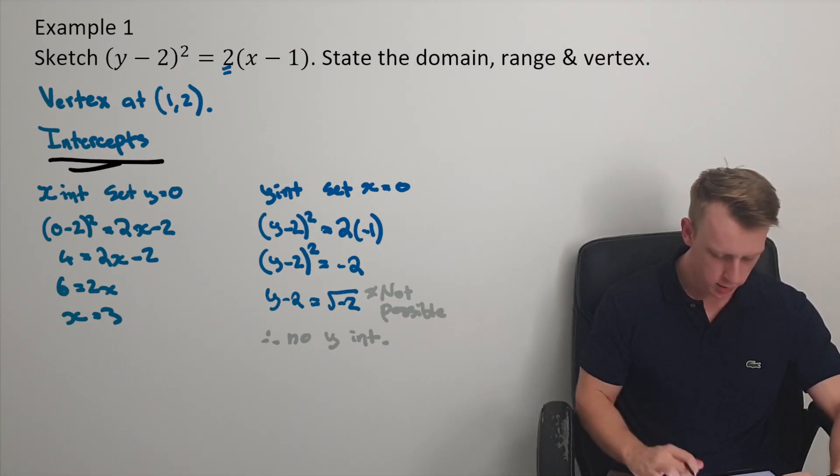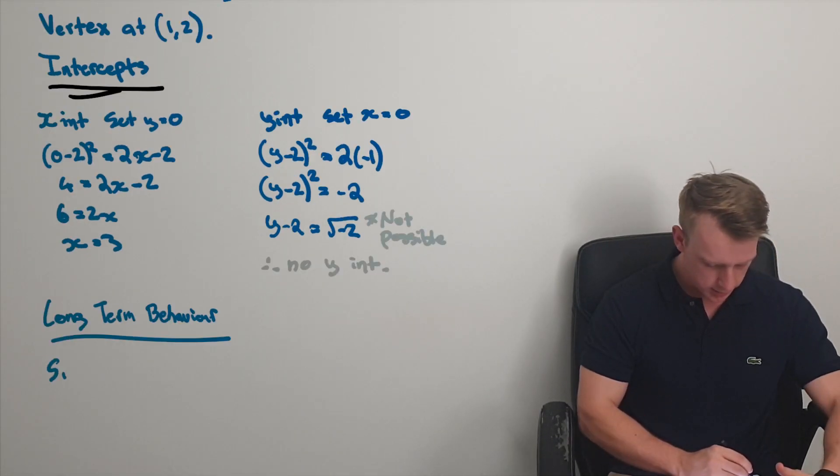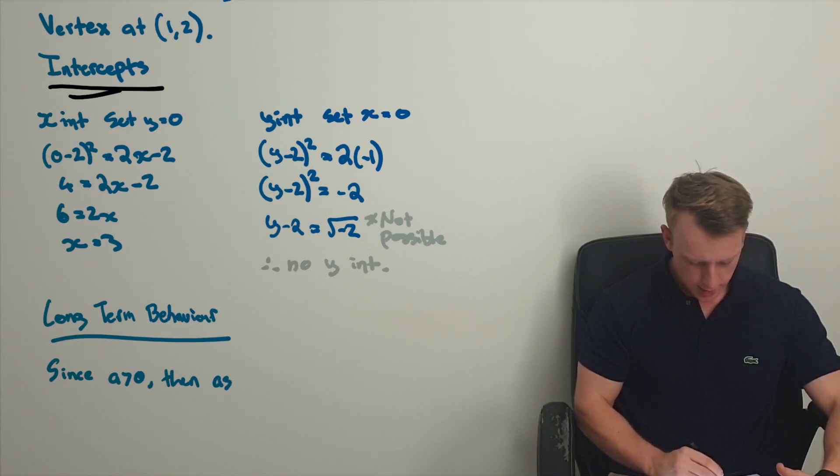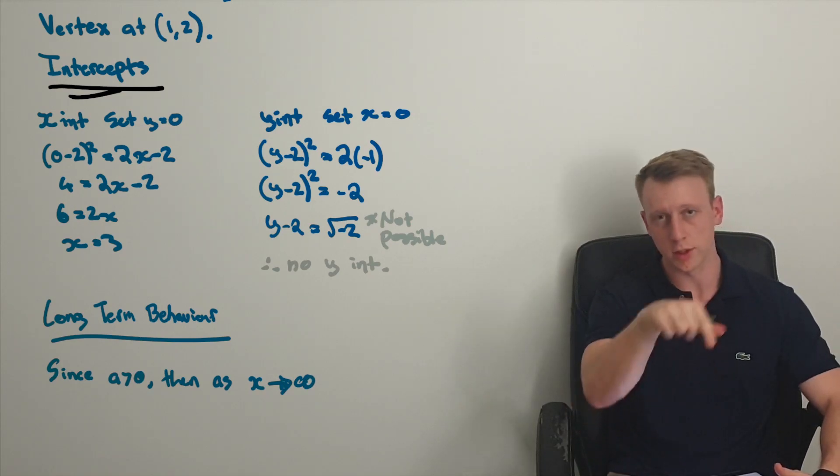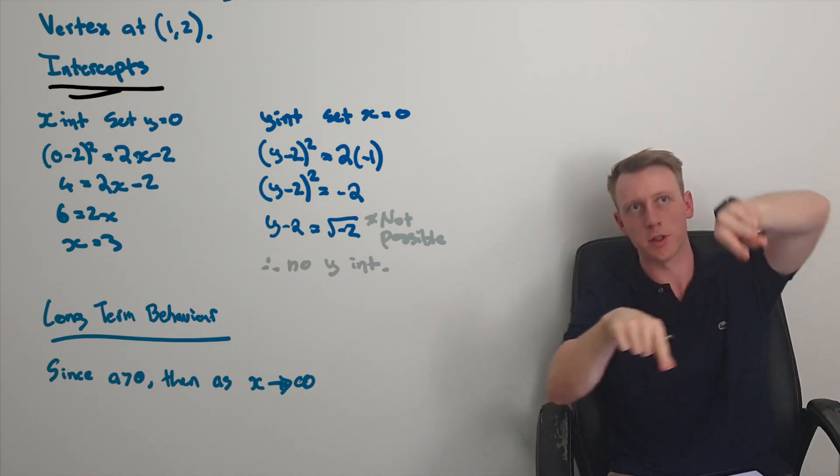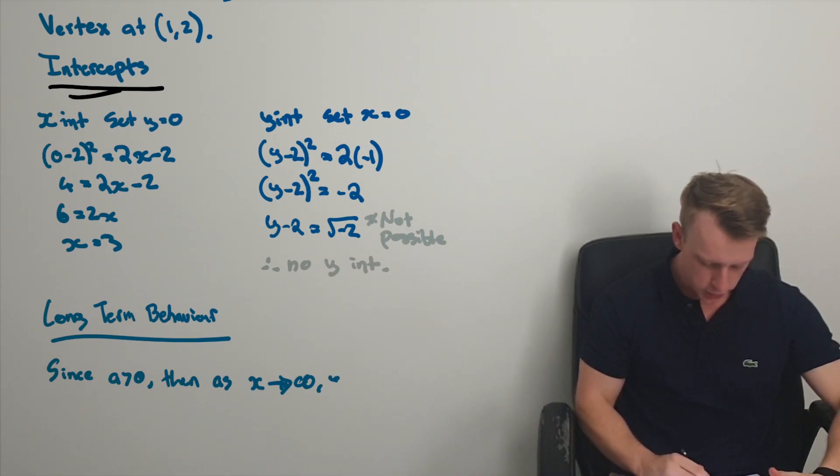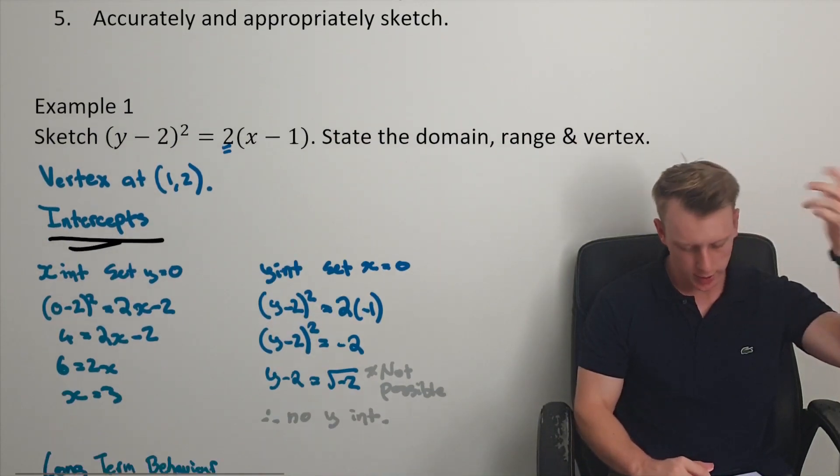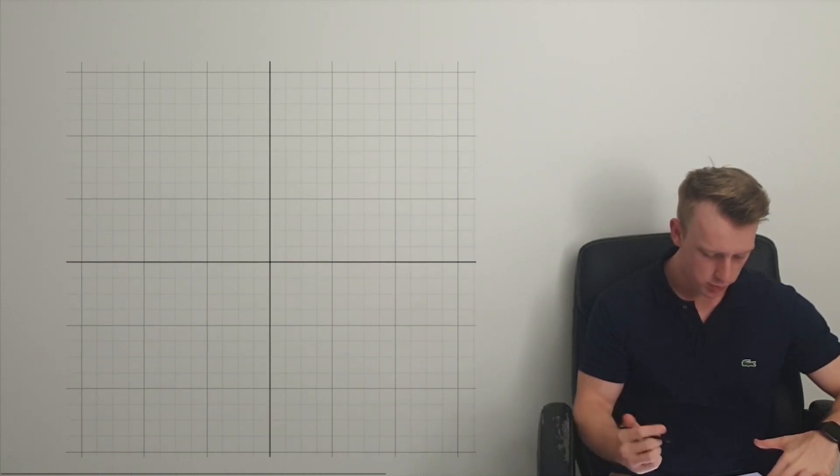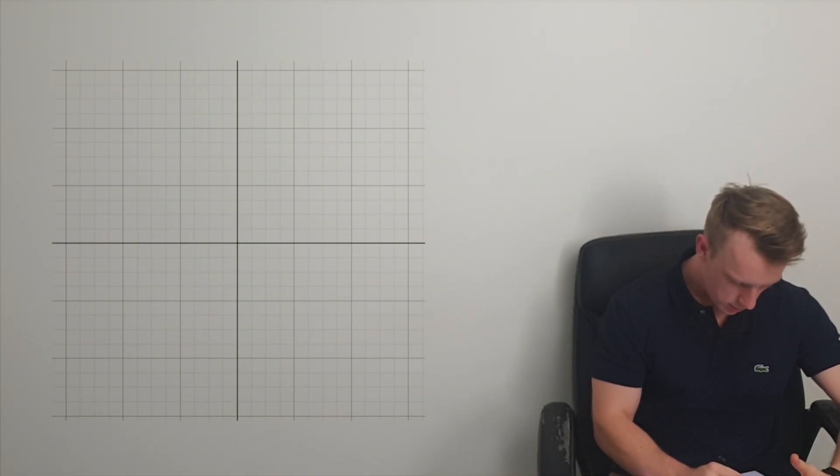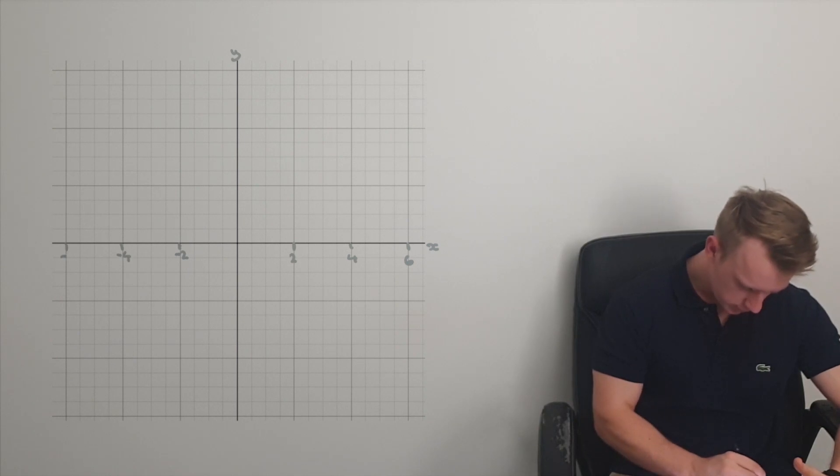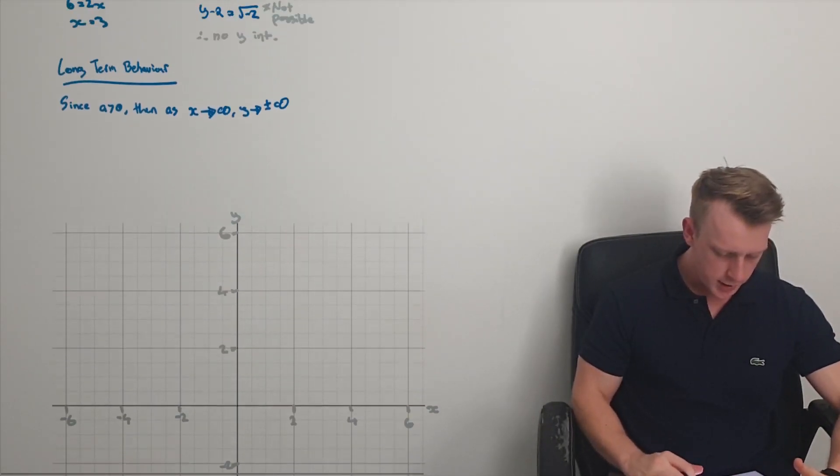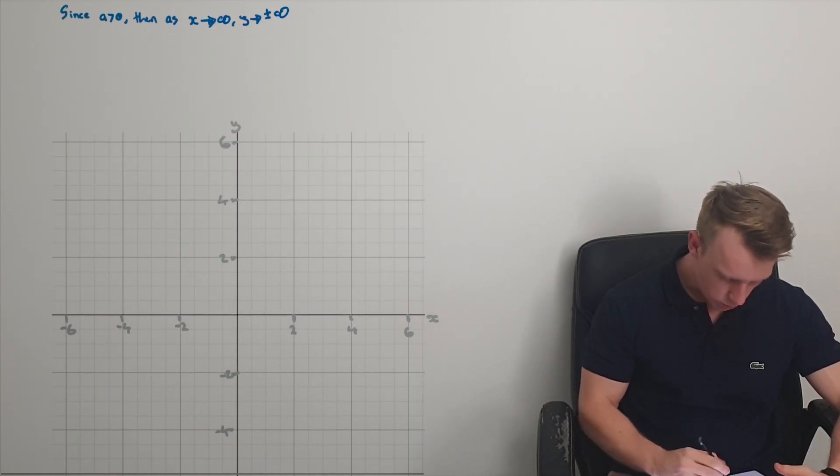Now we want to look at the long-term behavior. That's based on this guy here, the long-term behavior. Since a is greater than 0, then as x goes along this axis going towards infinity, I know that it's going to spring off sideways accordingly. So I'm going to have y shooting off towards plus minus infinity as that sideways parabola. Now I just need to sketch and label axis, put things on.